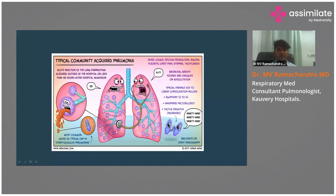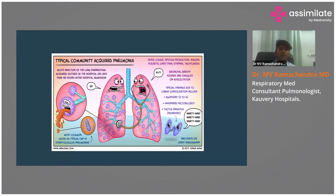For examination: bronchial breath sounds and crackles on auscultation. Egophony — if you ask the patient to say 'E' it is heard as a nasal sound. Whispering pectoriloquy — if you place a stethoscope over an area of consolidation and ask the patient to whisper, it will be heard very clearly compared to other areas. Tactile fremitus and vocal resonance will both be increased in consolidation.